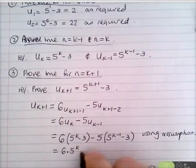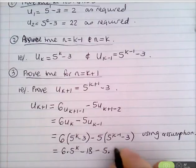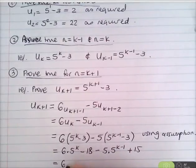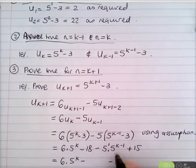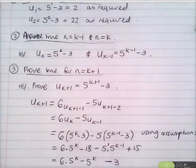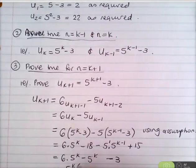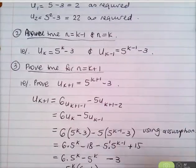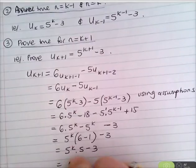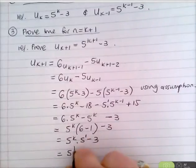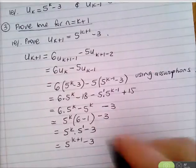Expanding: 6·5^k − 18 − 5·5^{k−1} + 15. Since 5·5^{k−1} = 5^k, this gives 6·5^k − 5^k − 3, which equals 5^k(6 − 1) − 3 = 5^k · 5 − 3 = 5^{k+1} − 3, as required.